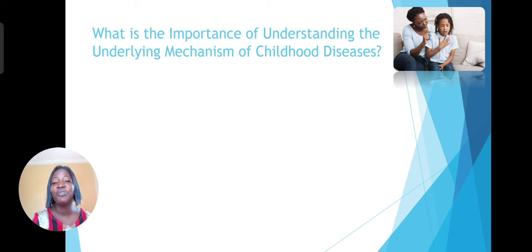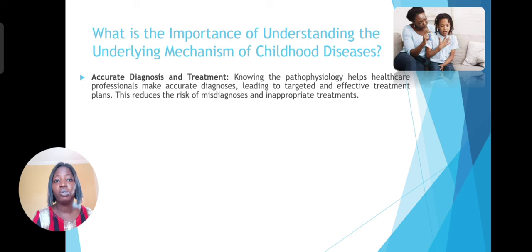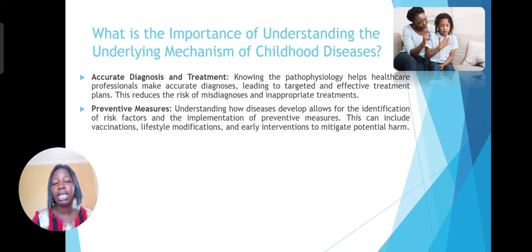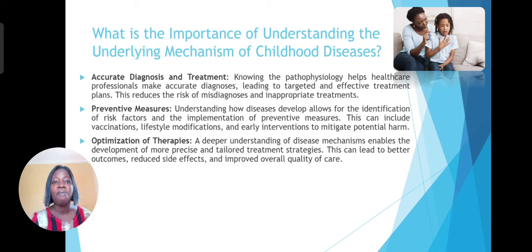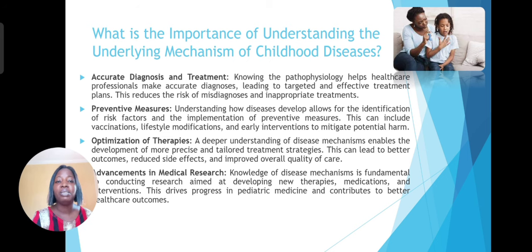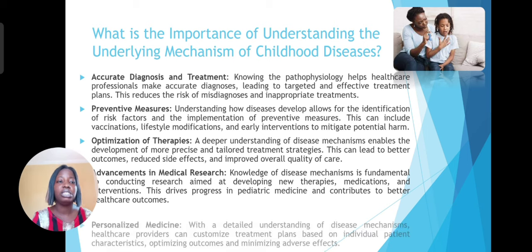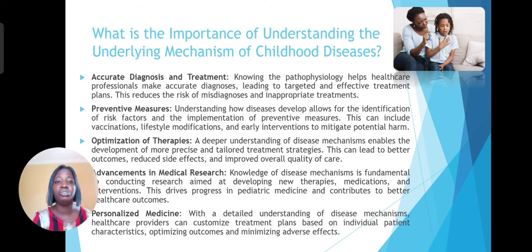This is like an overview of the pathophysiology of childhood diseases. So why do we need to understand the underlying mechanism of childhood diseases? Number one, for accurate diagnosis and treatments. For preventive measures — understanding how diseases develop allows for the identification of risk factors so that we'll be able to prevent them from occurring. It also helps to optimize therapies and advancements in medical research, because knowledge of this will help to develop new strategies to actually prevent these diseases and treat them properly.